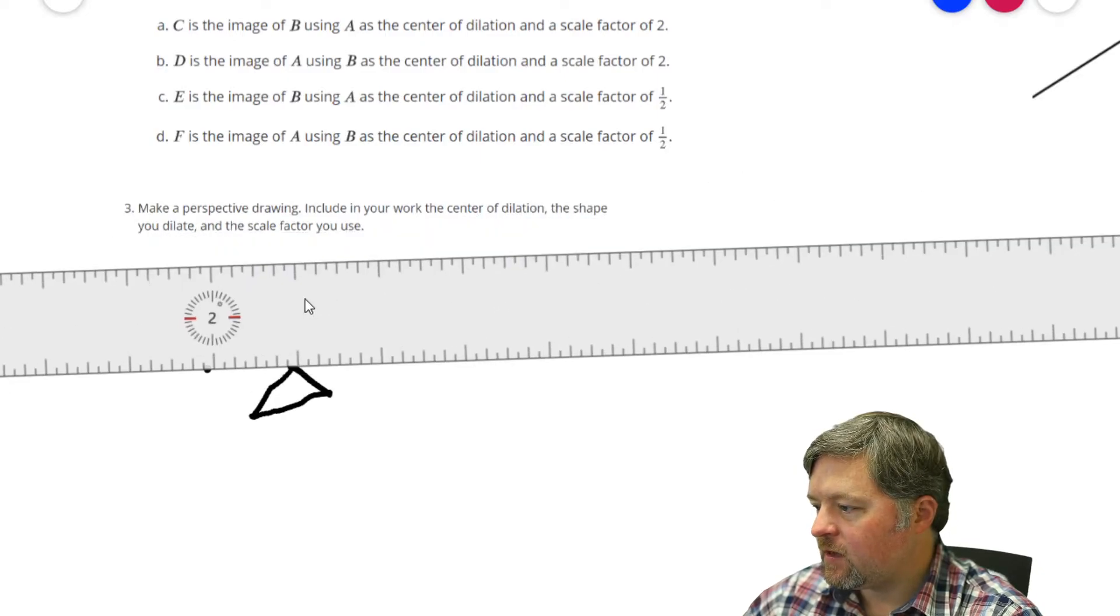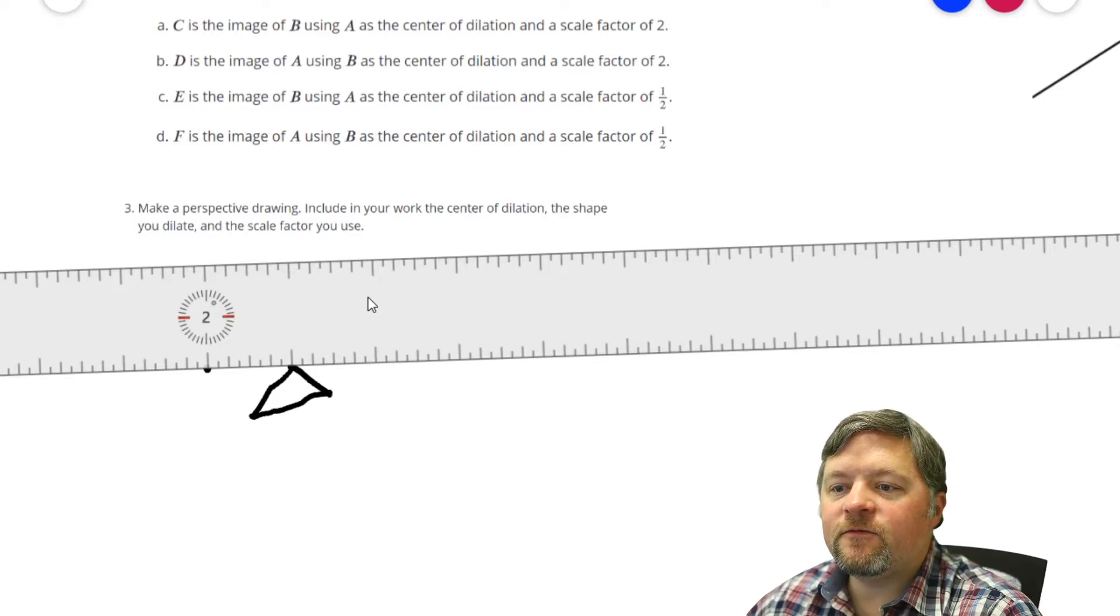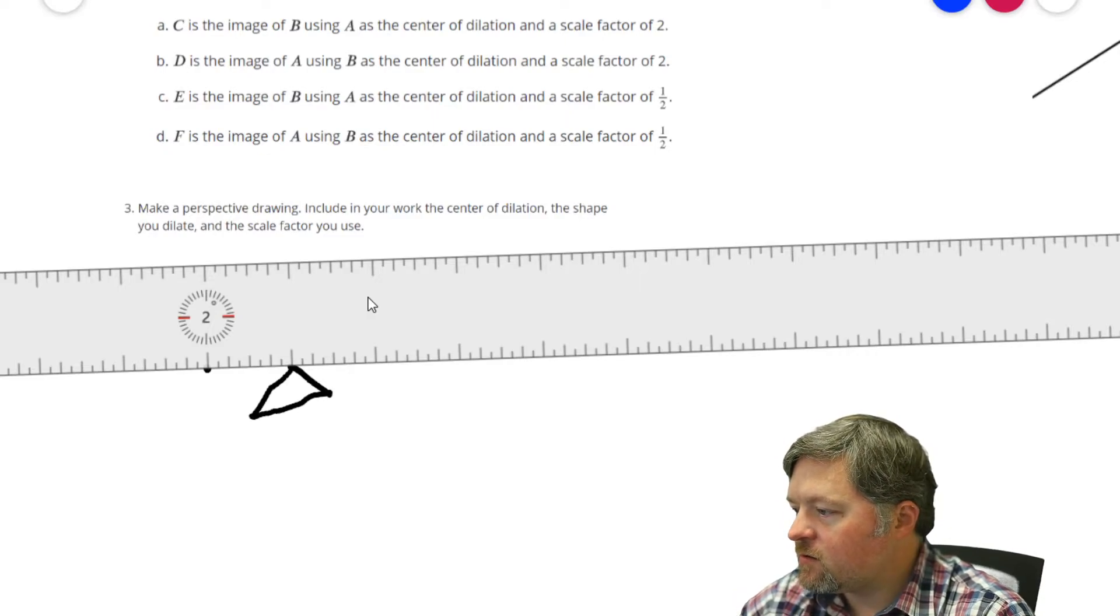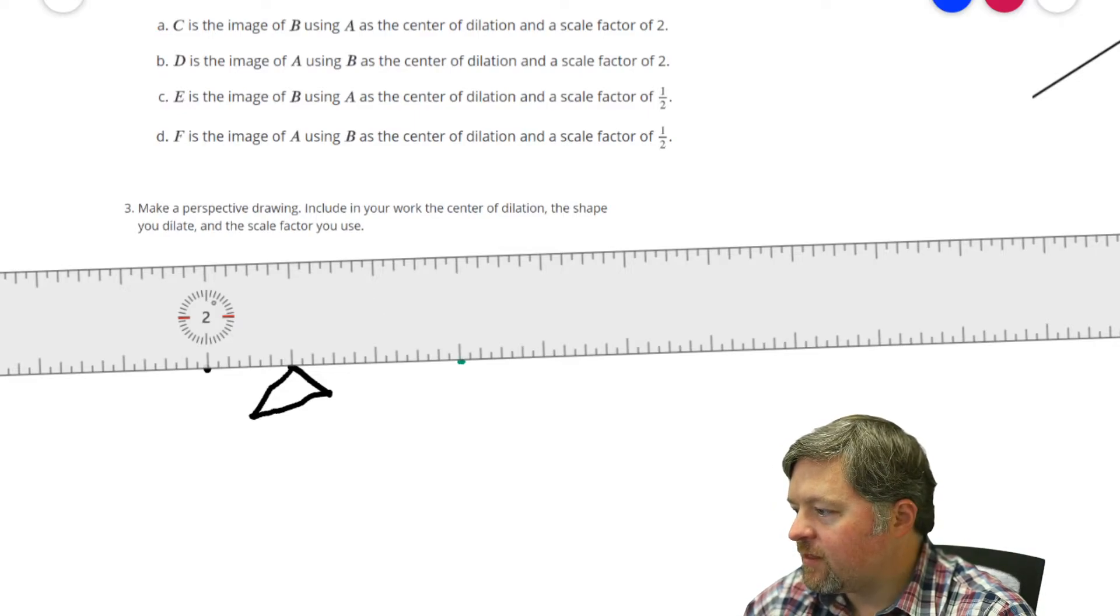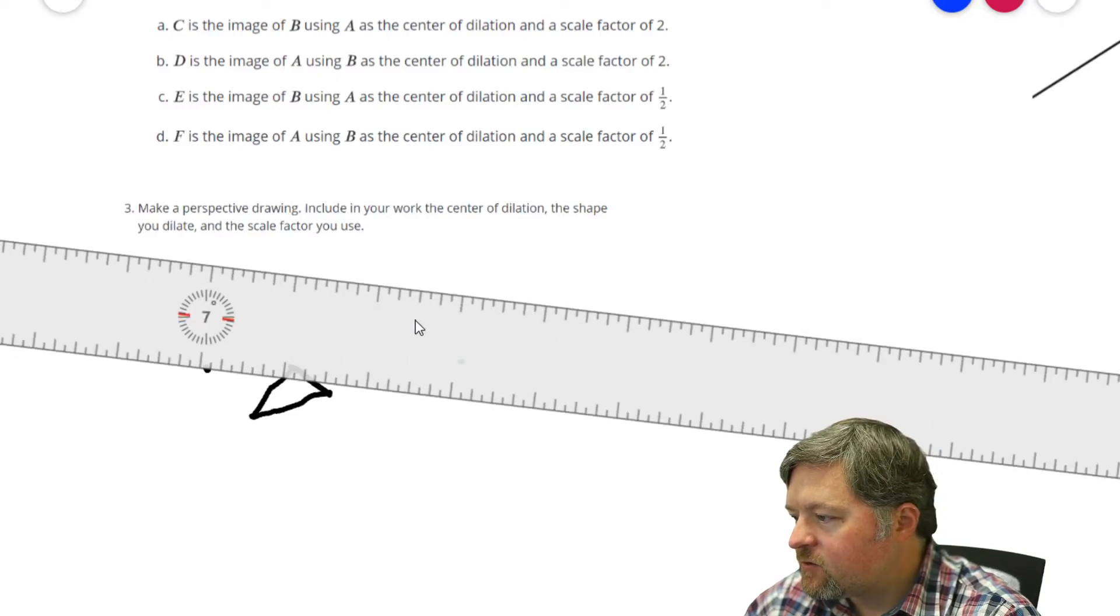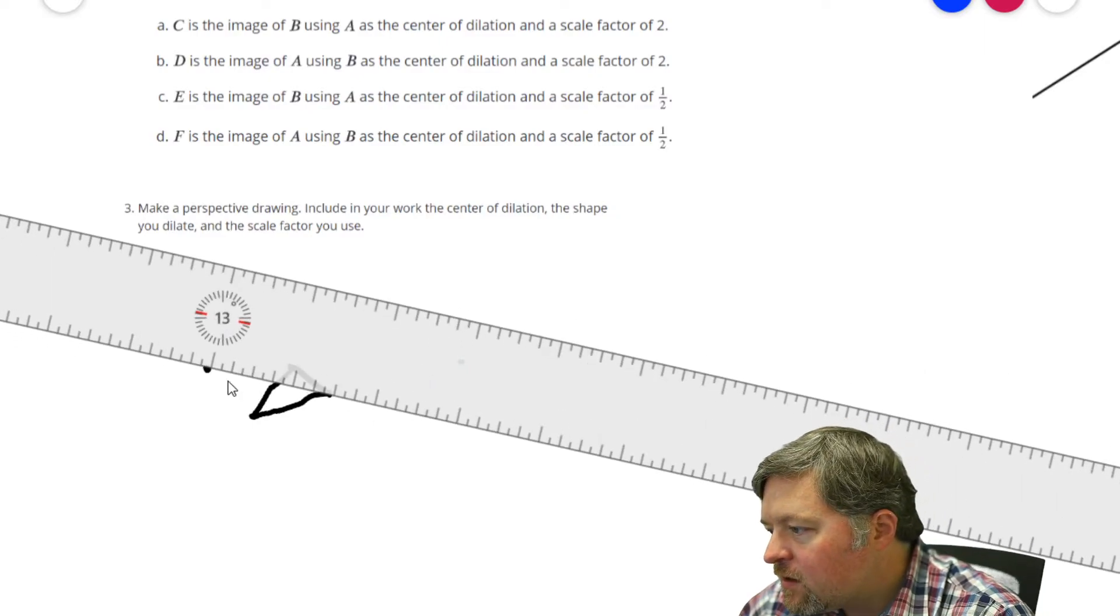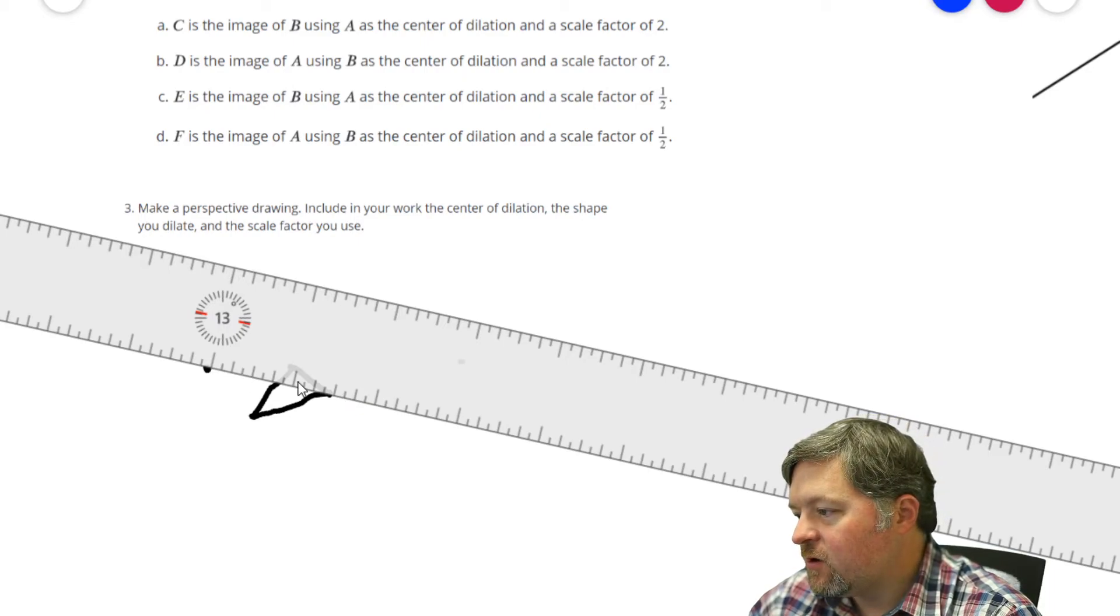Actually, that makes it easier. How about if I use a scale factor of three? So, this looks like one unit. Scale factor of three would make it one, two, three units. So, the new point will be there. Let me do the next one. One and a half times three is four and a half. So, one, two, three, four and a half. My new point is right there.